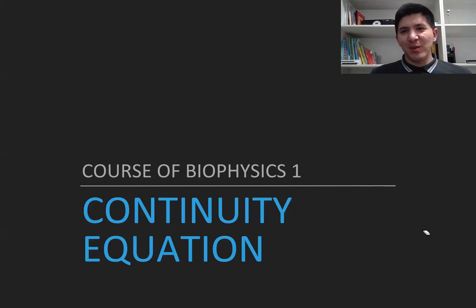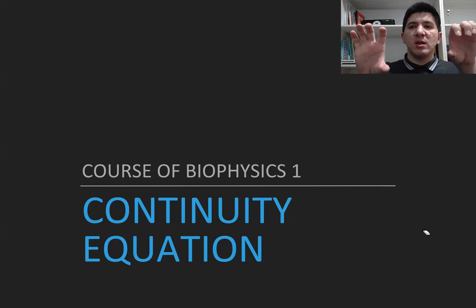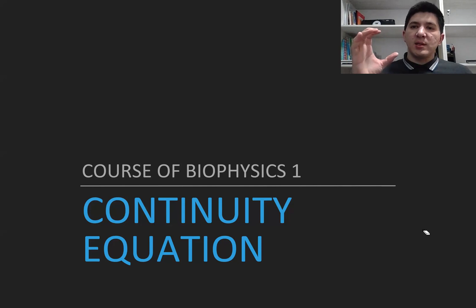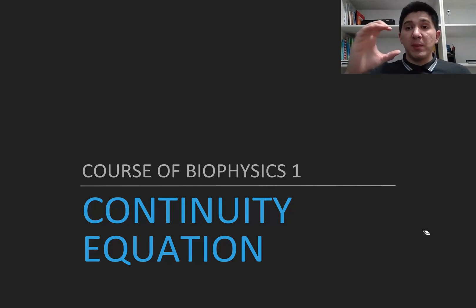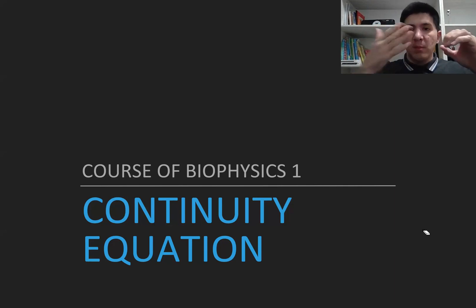In this lecture we're going to talk about the continuity equation, which is very similar to the conservation law of mass but for fluids. It basically tells us that the amount of fluid passing through different tubes with different radii is the same. For example, the amount of blood passing through the aorta with a big radius is the same as the amount of blood passing through smaller blood vessels, like arteries, per one second.